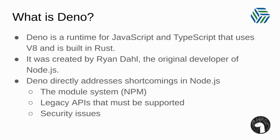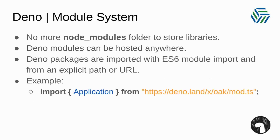Deno is a runtime for JavaScript and TypeScript that has been written in Rust and it's using V8, the JavaScript engine that is currently part of Google Chrome and Node.js. Deno was created by Ryan Dahl, the original developer of Node.js, and with Deno he's trying to fix some of the flaws he found in Node.js such as the module system, legacy APIs that must be supported, and some security issues. By the way, this is not a fork from Node.js — Deno is a completely new implementation.